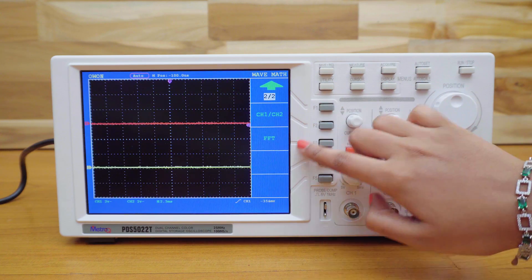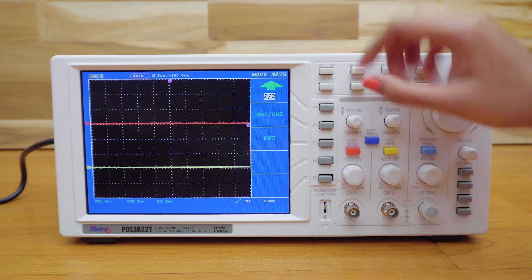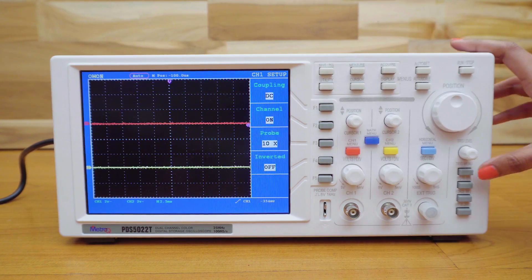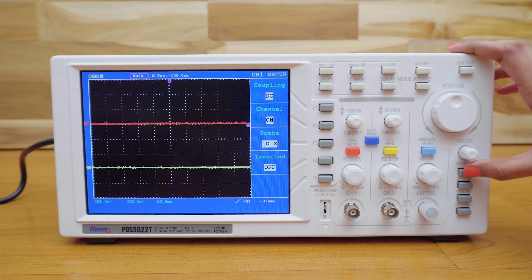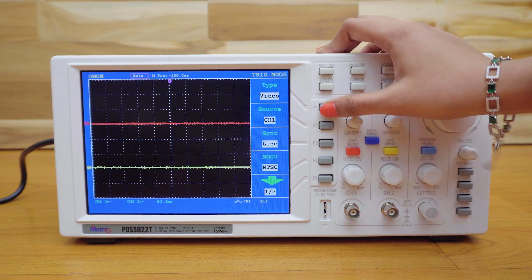There is also an FFT feature, which is fast Fourier transform, which is very similar to that of the spectrum analyzer. This one's the trigger menu of the DSO. You can see the details on the screen.